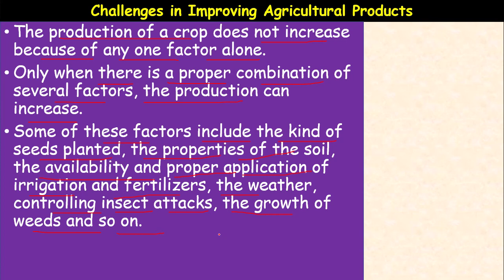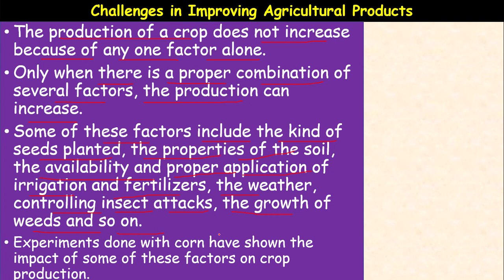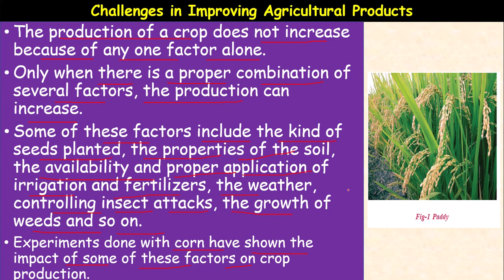Agriculture is a process that involves several steps right from the processing of soil to harvesting. There are many stages during the crop duration, and a farmer has to take care of the crop to get a good yield. Experiments done with corn have shown the impact of some of these factors on crop production. When these factors are taken into control, they automatically give good results in production.